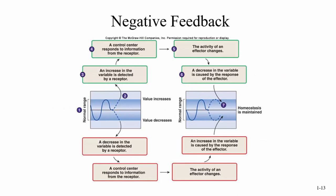We have feedback mechanisms — we have negative feedback and positive feedback mechanisms. Negative feedback is a good example of the thermostat: if you go above your set range, it cools you down; if you go below, it warms you up. An increase in the variable is detected by a receptor, a control center responds to information from the receptor, the activity of an effector changes, and a decrease in the variable is caused by the response of the effector, so that we maintain homeostasis.